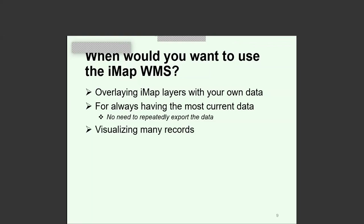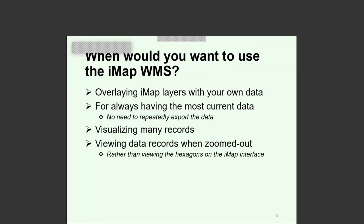Another use case is when you want to visualize many records at once. The IMAP main map interface has a powerful hexagon view that groups records together, which is useful for getting a sense of how many records are in an area. But sometimes people need to view individual records at a zoomed-out or small-scale map — the web map services allow you to view all data records at that zoomed-out scale.